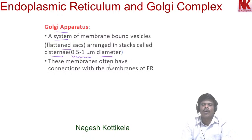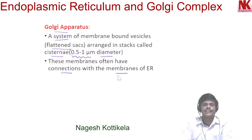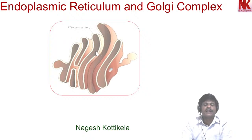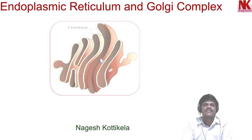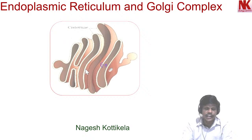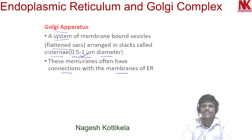The membranes of Golgi apparatus often have connections with the membranes of the endoplasmic reticulum. You can see in the picture these are the cisternae, parallelly arranged. They are flattened sacks arranged one upon the other to form stack-like structures. Each cisternae is about 0.5 to 1 micrometer in diameter.